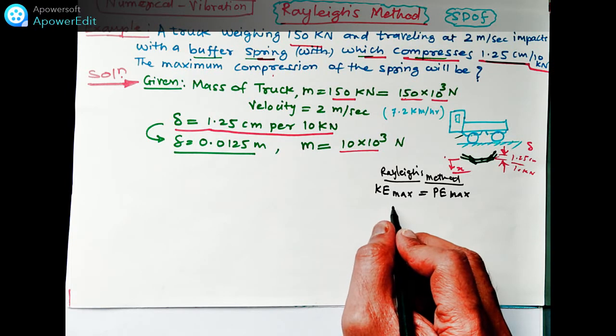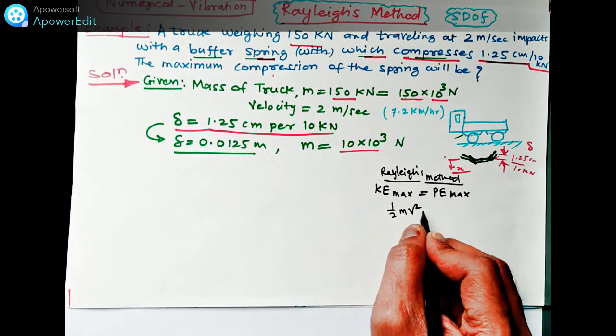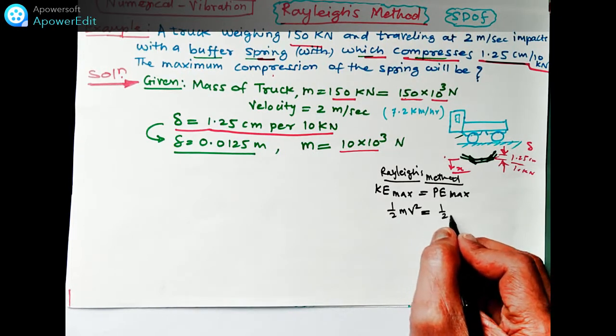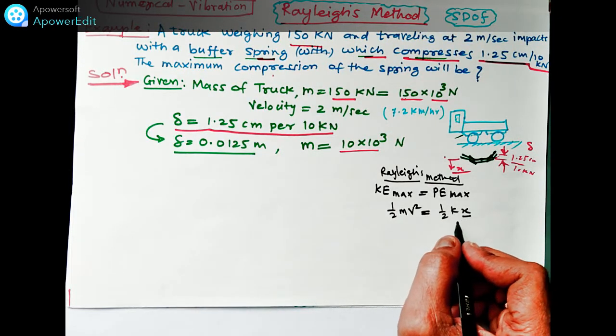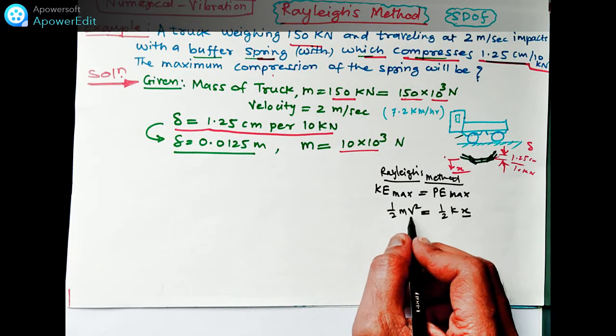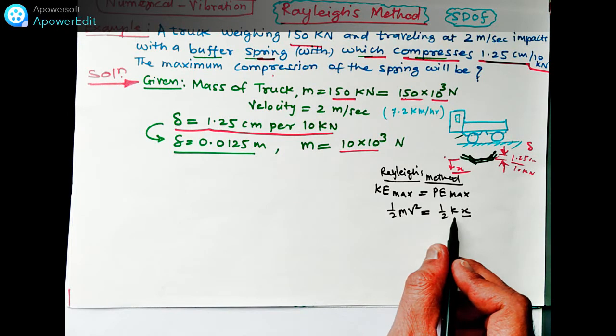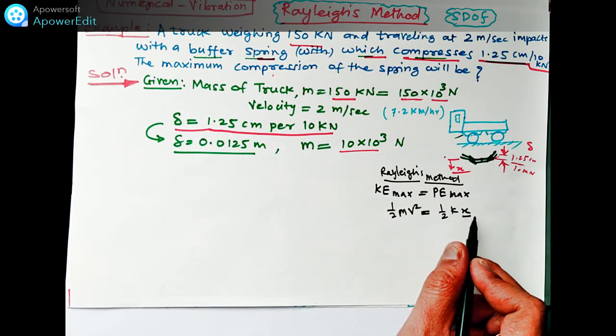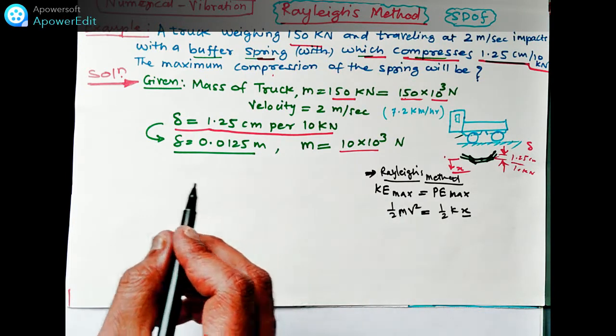By using this formula, what is the KE max? KE max is half into M into V square, which is equal to half into K into X. Here X we have to find out. K we don't know. V we have. M weight of this truck we have. This K we have to first find out, after that X by using this Rayleigh's method.